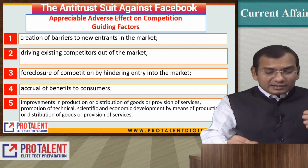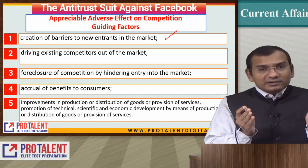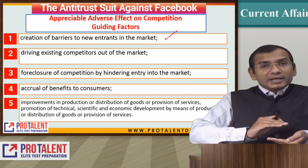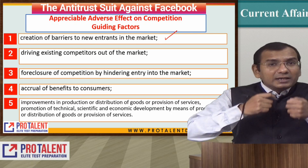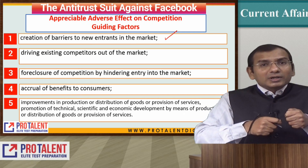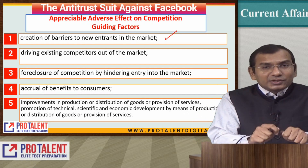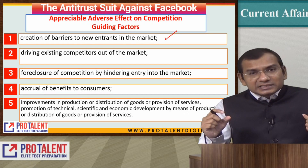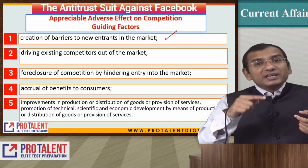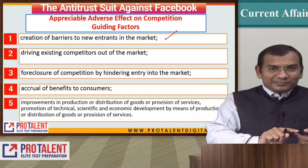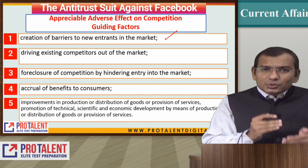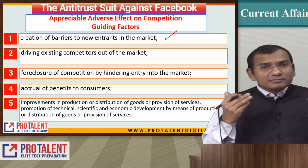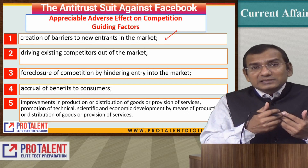If we are able to identify an appreciable adverse effect on competition, we can determine whether a company's action is anti-trust and anti-competitive. The factors include: whether it is creating barriers to new entrants in the market — for example, by requiring huge advertising spending or not allowing certain players to enter. Facebook, for instance, does not allow APIs of various other players on its platform. If you want to share something from Twitter on Facebook, it becomes difficult because Facebook does not allow that. That is how they restrict new entrants.